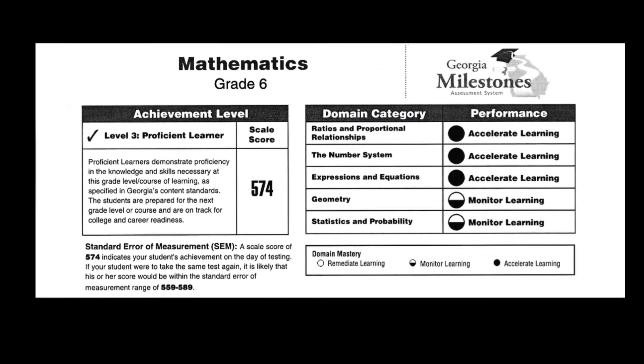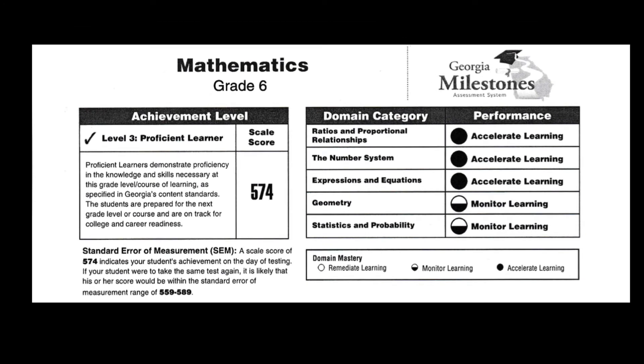Now we're going to look at how the student will see their results. The previous slides were based on what the teacher sees. Now we're going into what the child will actually see in their individual score booklet. Each child receives a variety of pages describing their performance — an overall summary page and then individual pages based on each content area.